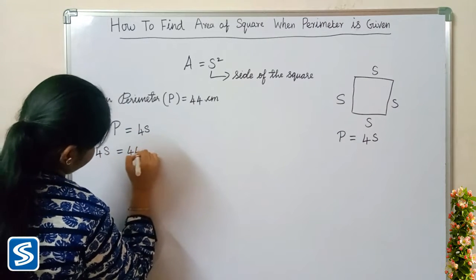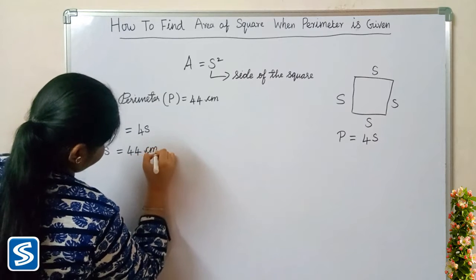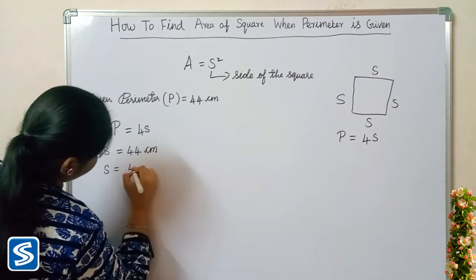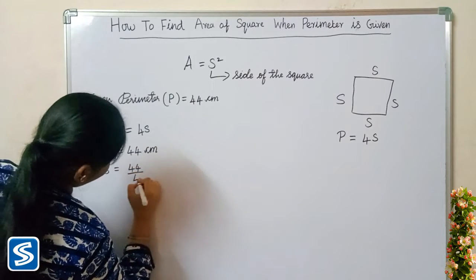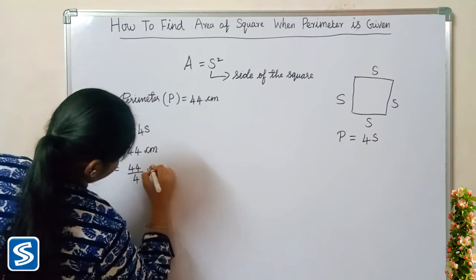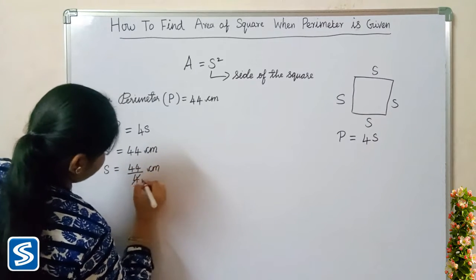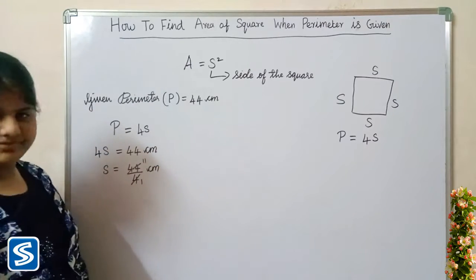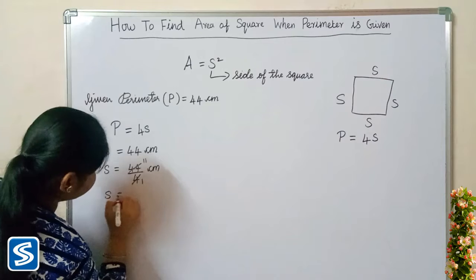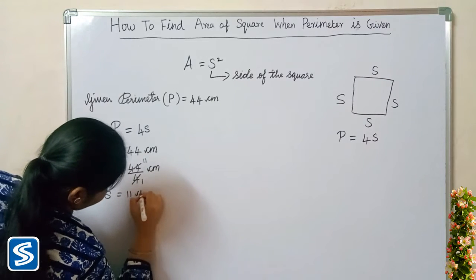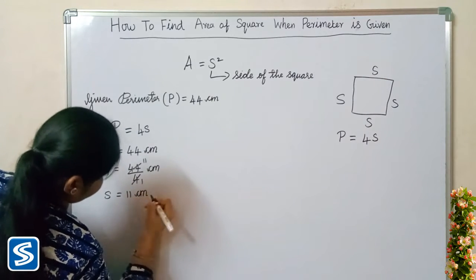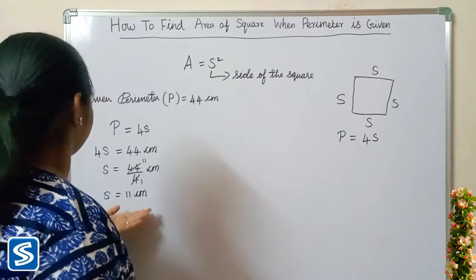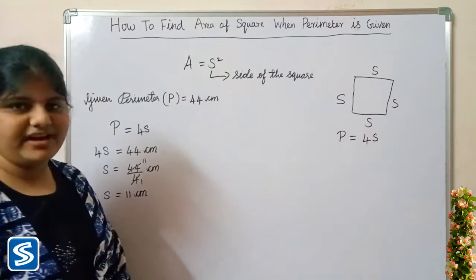So perimeter P is equal to 4S, which means 4S is equal to 44 centimeters. Therefore S is equal to 44 divided by 4 centimeters. Since 4 times 11 equals 44, S is equal to 11 centimeters. Now we have found the value of the side.